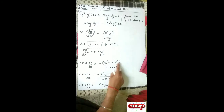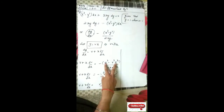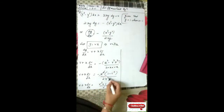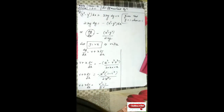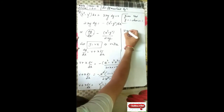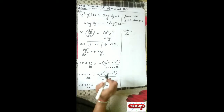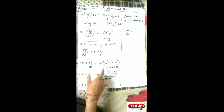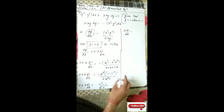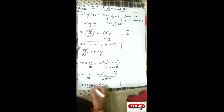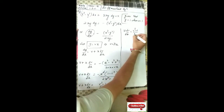Substitute in place of dy/dx: v plus x dv/dx equals minus (x² minus v²x²) upon 2x times vx. Take x² common from numerator and denominator — x² cancels. Taking minus inside gives minus(1 minus v²) upon 2v. Now take v to that side: x dv/dx equals (v² minus 1) upon 2v minus v.